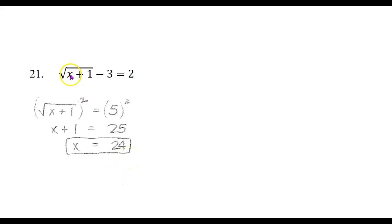Subtract 1 on both sides and x equals 24. So if x is 24: 24 plus 1 is 25, the square root of 25 is 5, and 5 minus 3 is 2.